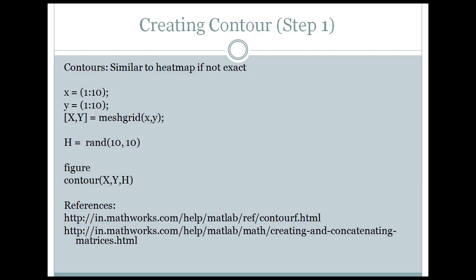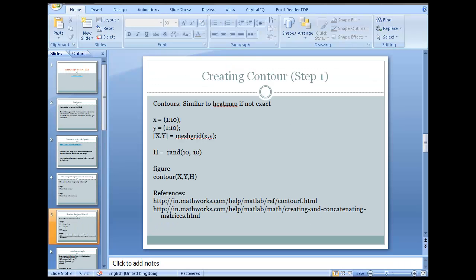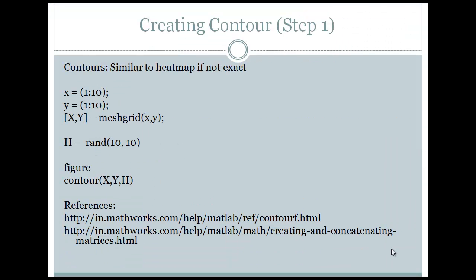The first step is creating contours. I have created a contour of two dimensions. To define the contour, we have to first define the surface. In this example, we have defined a surface that ranges from 1 to 10 on the X and Y axis. Then we define the mesh grid, which is the surface upon which we will have Z, or H in this case, which would define its height. If we want to create a contour out of these dimensions, we can do that.